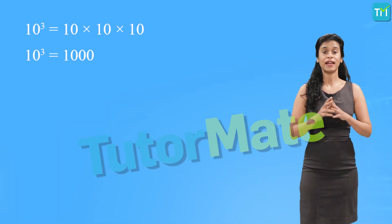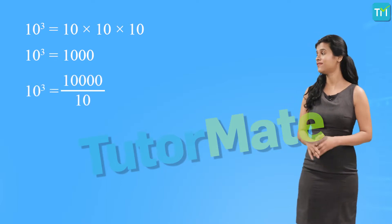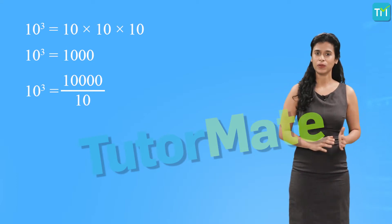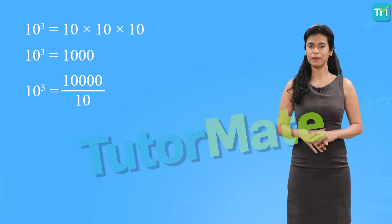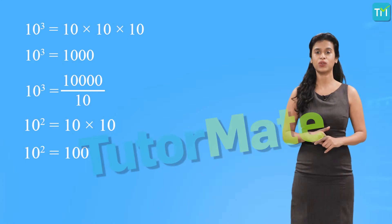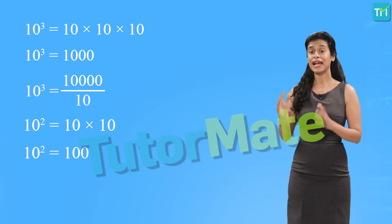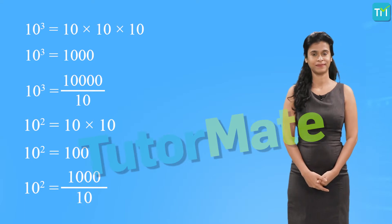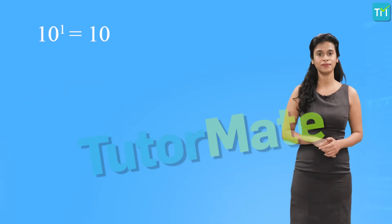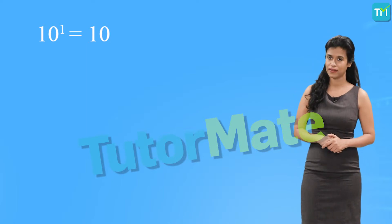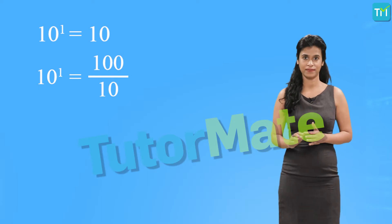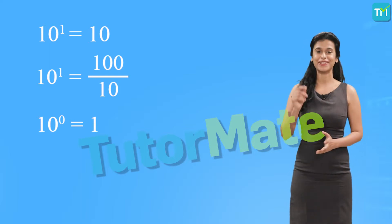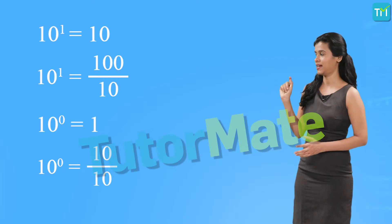Now pay close attention. 1000 can be written as 10,000 divided by 10, and the 10 from the numerator and denominator will get cancelled to give 1000 again. Similarly, 10 squared is 10 into 10, which is 100, and that can be written as 1000 by 10, which is 10 cubed upon 10. Now, 10 raised to 1 is equal to 10, and this is nothing but 100 by 10. Finally, we come to 10 raised to 0, which is equal to 1, and this is nothing but 10 upon 10.